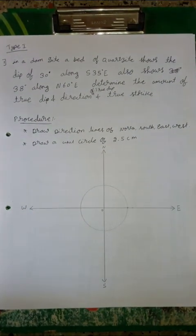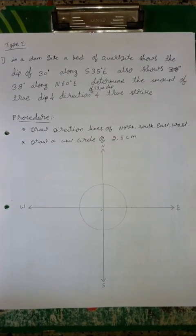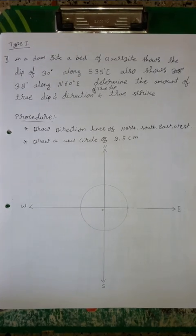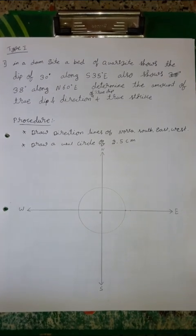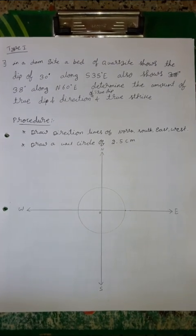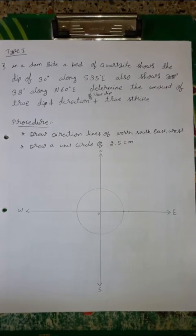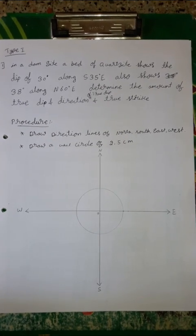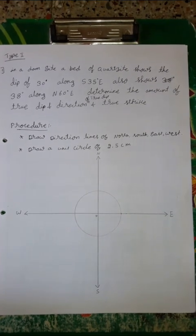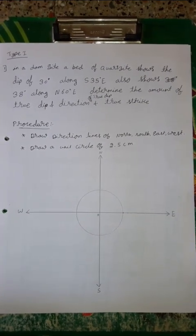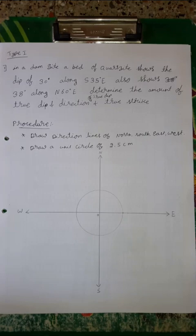Now I am going to talk about how to solve first type problems. In a dam site, a rock unit shows a dip of 30 degrees along south 35 degrees east, and also shows 38 degrees along north 60 degrees east. Determine the amount of true dip, direction of true dip, and the strike.